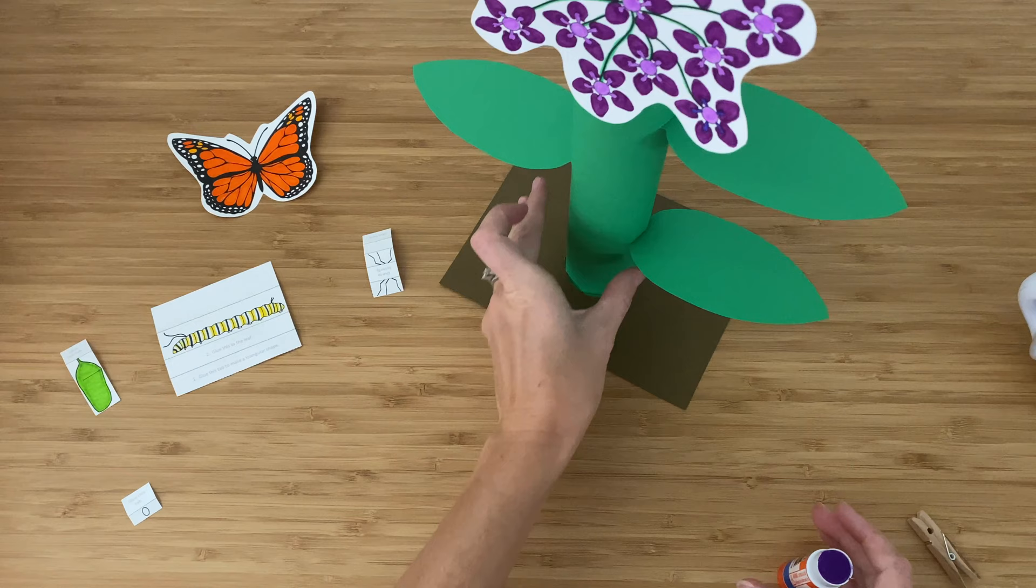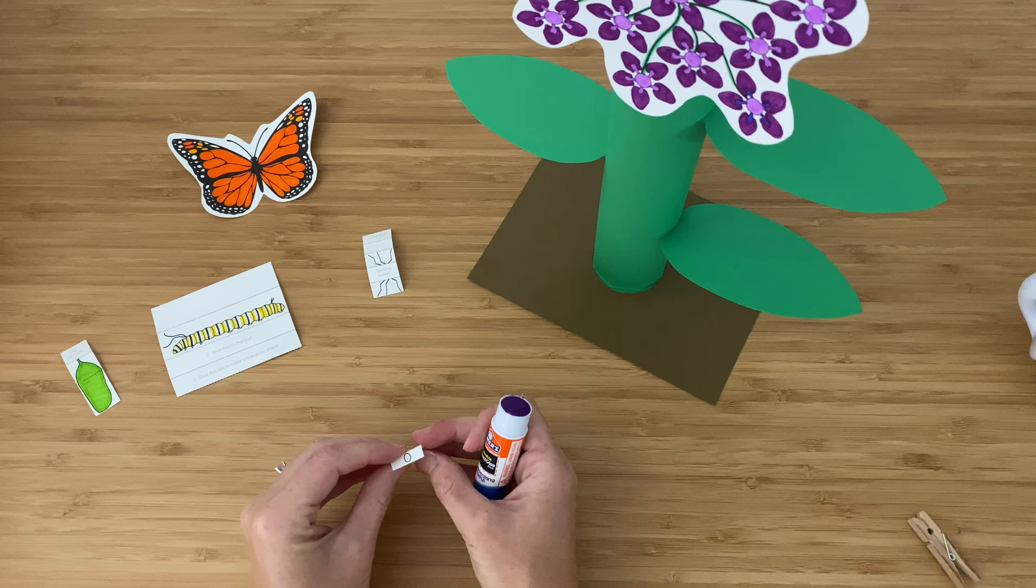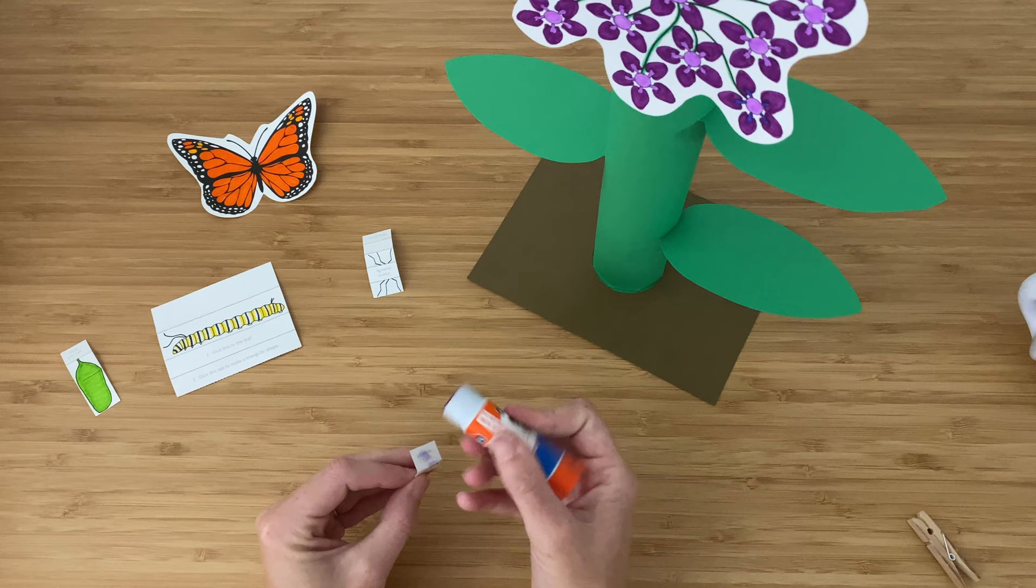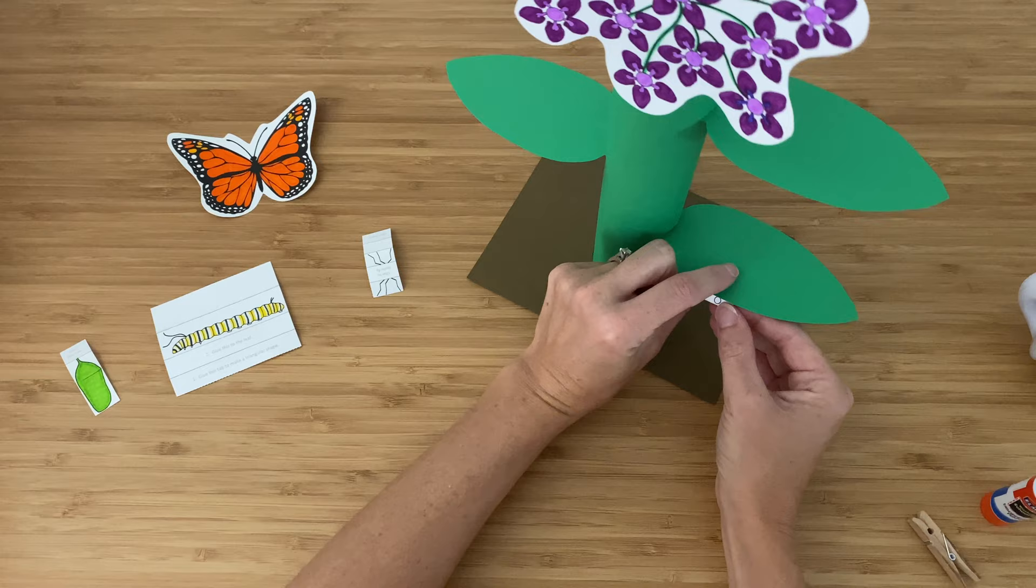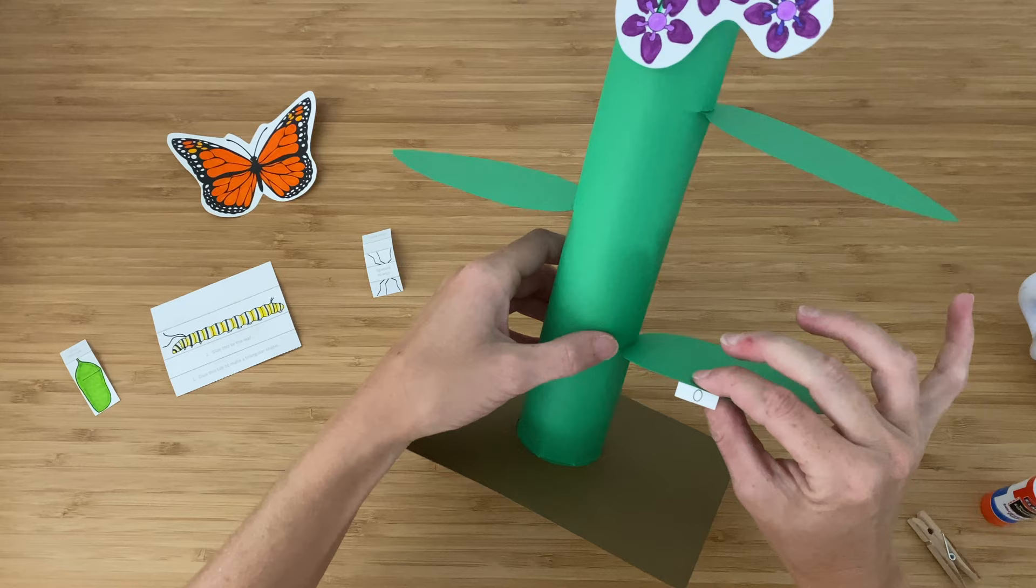Okay, now I'm going to show you how to put these other pieces on here. This is the egg. It's pretty tiny. I'm going to fold it. I already did that, but there it is. You can fold it on that gray dotted line and then stick it on the bottom leaf near the edge so that you'll be able to see it.